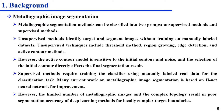Metallographic segmentation measures can be classified into two groups: unsupervised measures and supervised measures. Unsupervised measures use the intrinsic association between image features to identify target and segment images without training on manually labeled data. Supervised techniques include threshold-based measures, region growing, and edge detection measures. Although these measures have shown promising results, they encounter problems such as noise sensitivity and difficulty in considering geometric information in segmentation. Chan proposed the CV model based on level set measures, which shows better results in the metallographic segmentation test.